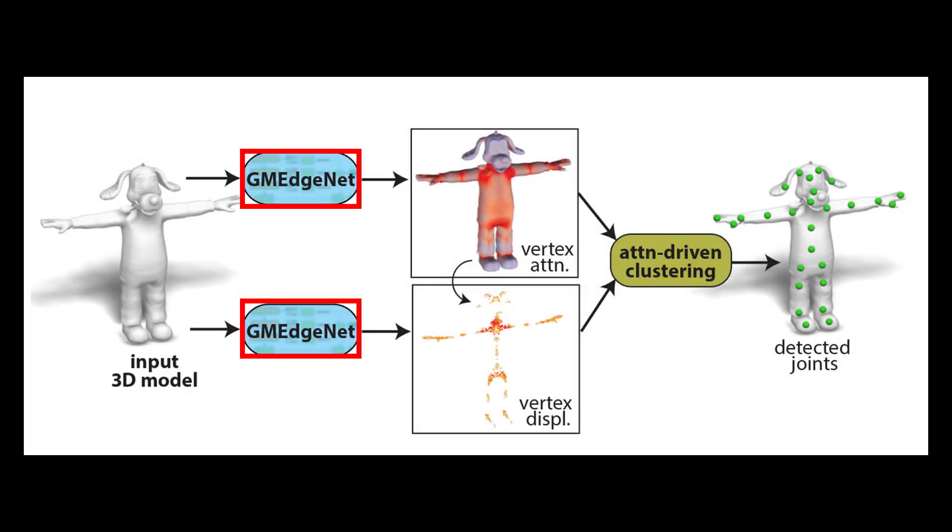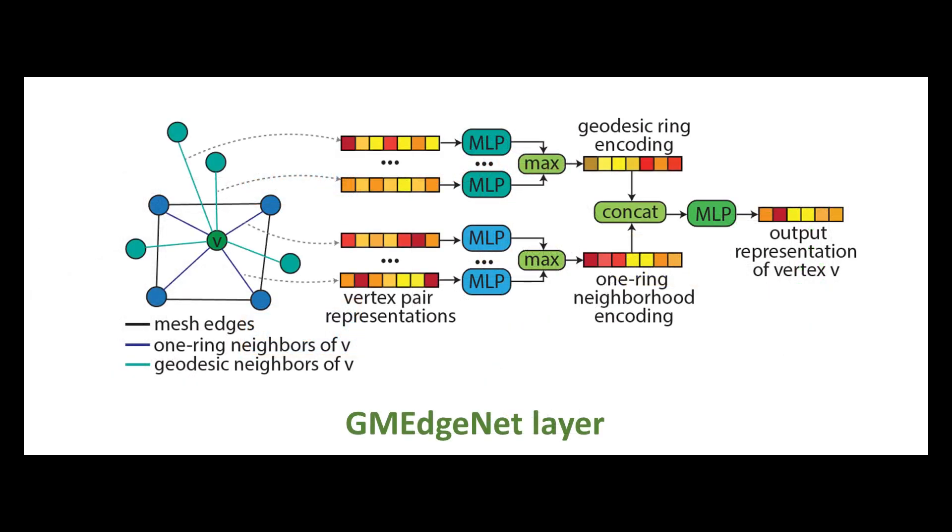Mesh attention and vertex displacements are predicted through a learned graph neural network. The network operates on the input mesh processing both topological and geodesic neighborhoods, trained with an edge sampling strategy that promotes robustness for a variety of vertex samplings.